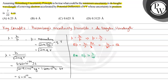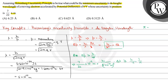From Heisenberg's uncertainty principle, Δx·Δp ≥ h/4π. Substituting Δx = 7/22 nm = (7/22)×10⁻⁹ m, and Δp = (h/λ²)·Δλ, we get: (7/22)×10⁻⁹ · (h/(5×10⁻¹⁰)²) · Δλ ≥ h/4π. We can write h/4π as h/4 · (1/π), and since π = 22/7, we have 1/π = 7/22.